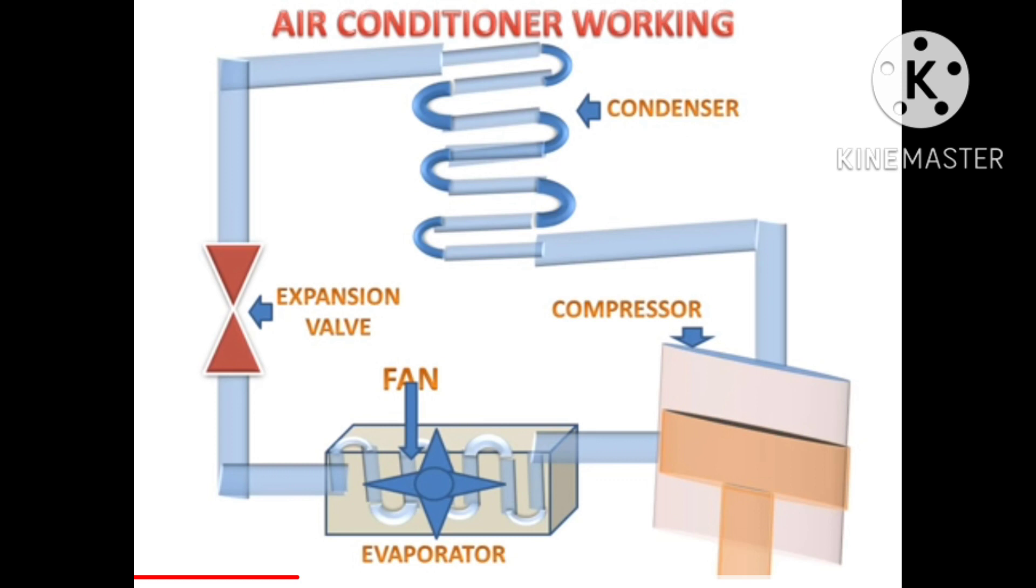This chilled liquid refrigerant is sent to the evaporator. Evaporator is placed near that space which is to be cooled. It takes the heat of the space and with that heat, the chilled liquid or chilled refrigerant which is passing through the evaporator tubes gets heated and with help of a fan, it circulates the cooling effect into the space which is to be cooled.